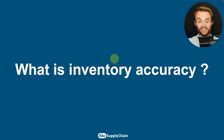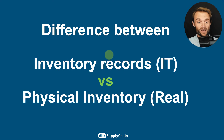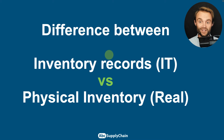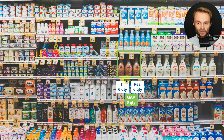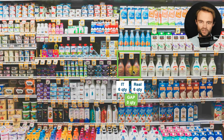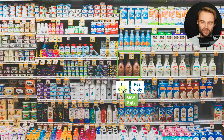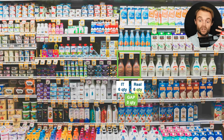So before going to Excel, what is inventory accuracy? It's basically the difference between your inventory records in your IT system — your ERP, WMS, or even your Excel spreadsheet — versus your physical inventory in real life. For example, if we take this retail example: we have this almond milk with chocolate, and we have six quantities in the system. In real life, when you count, you also have six quantities. So there is no gap — your accuracy is 100%.